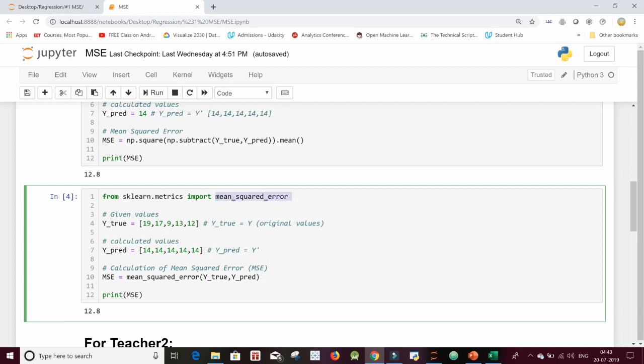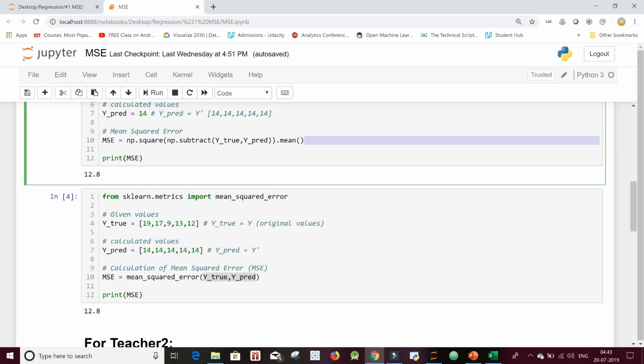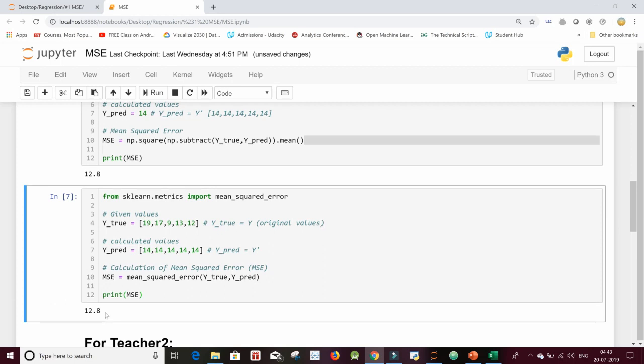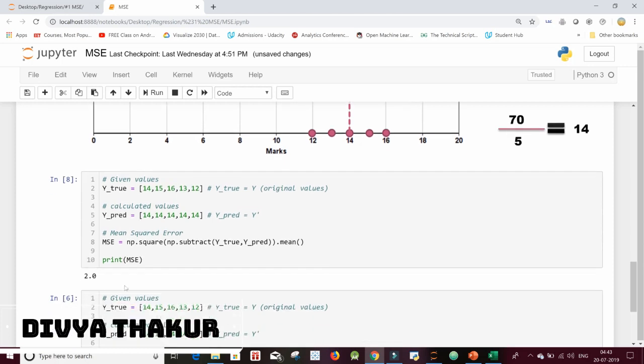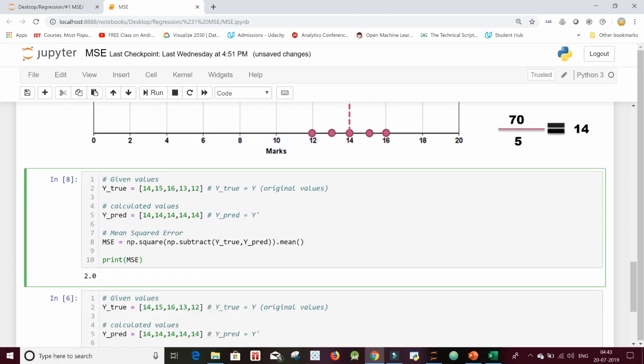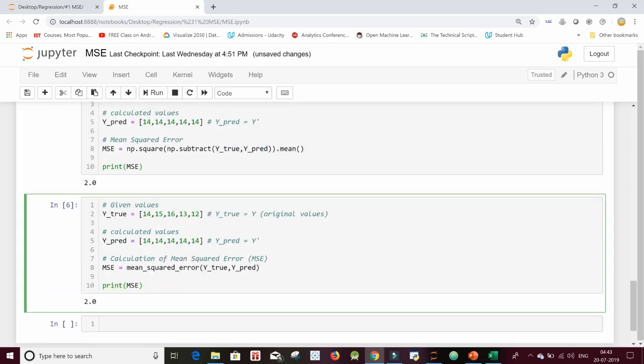And in brackets, because this is a function over here, use y_true comma y_pred. You don't have to write all of this logic over here. So if I run this cell, it's giving me 12.8 again. So you can repeat the step for teacher 2 again, compute it by using numpy and then again with scikit-learn to see, yes, this is 2 indeed.